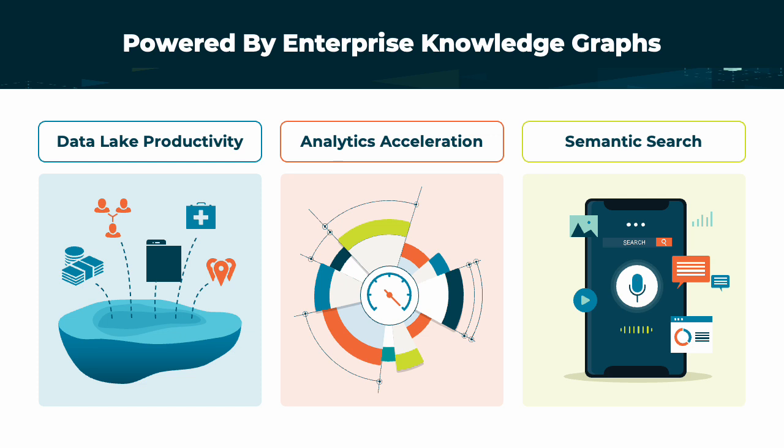Semantic search: how do you leverage the connections in the data to better find what you are looking for? So often, what we want is just outside our reach. We can remember that restaurant from last week, the dish we ordered, the cross street, but just not the name. This is exactly what a semantic search is trying to solve for — how do you use the connections in the data to narrow down what you are looking for, or even find insights you didn't know to ask for?